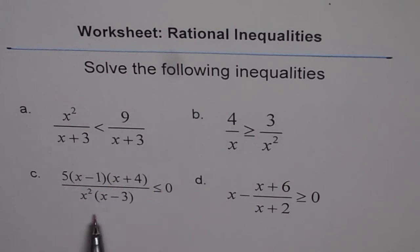Question c is already given in factored form: 5 times (x minus 1) times (x plus 4) over x squared times (x minus 3) less than or equal to 0. And the last is x minus (x plus 6) over (x plus 2) greater than or equal to 0.